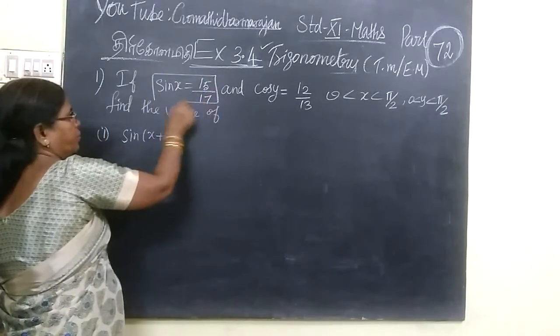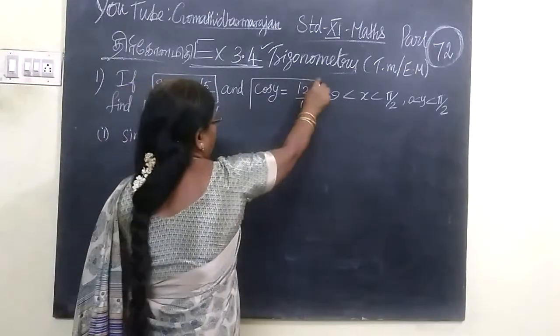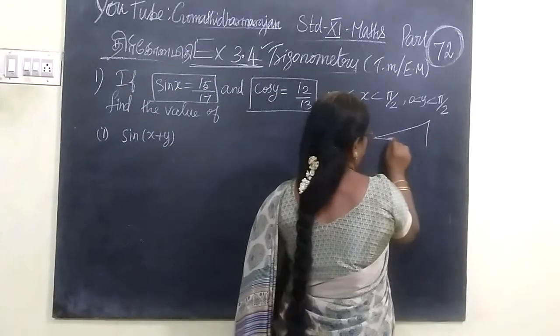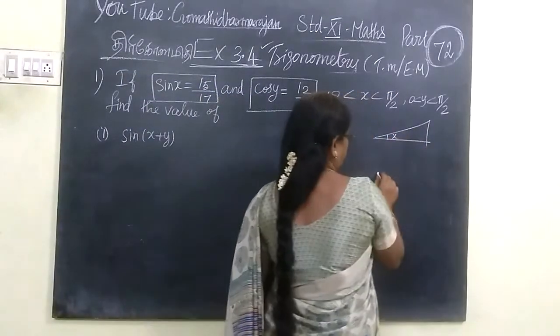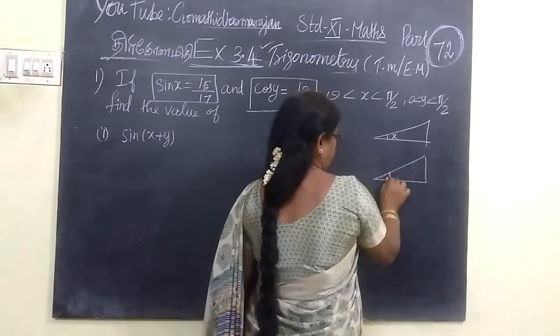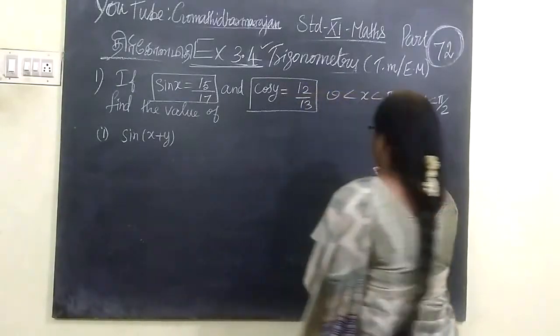We have given sin x equal to 15 by 17 and cos y equal to 12 by 13. So now we are finding trigonometric ratios. Then after that, we are using angle y.